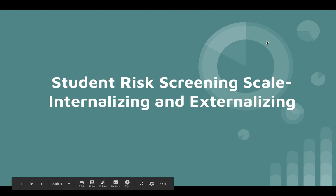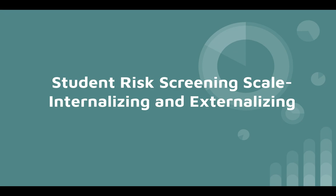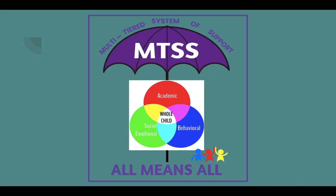Your school has chosen to use the SRSS-IE. Here's a brief introduction to this tool. The Student Risk Screening Scale is used as a universal screener to determine the social-emotional needs of students. This screener fits under your school's multi-tiered system of support framework as part of looking at the needs of the whole student.